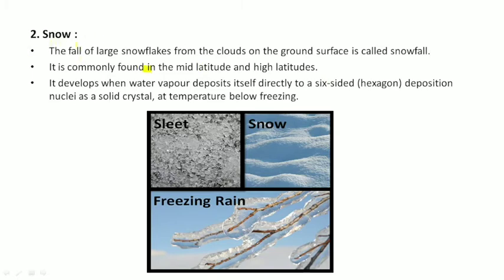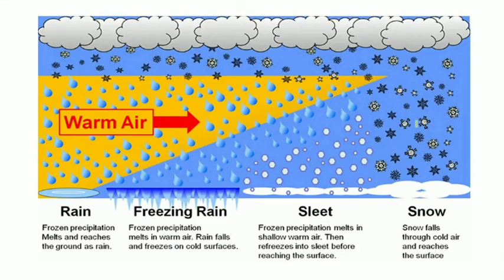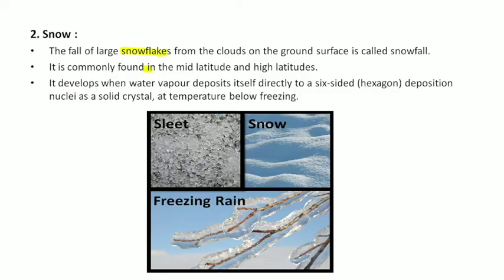What is snowfall or what is snow? The fall of large snowflakes from the clouds on the ground surface is called snowfall. It is commonly found in the mid-latitude or high latitudes region, in the hilly areas, in the temperate regions where the temperature is cold.